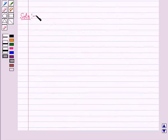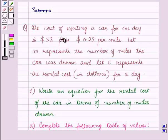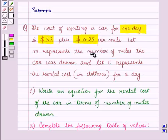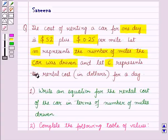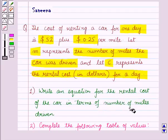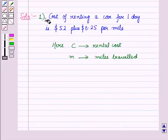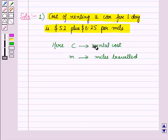Now let us start with the solution of the given question. We are given that the cost of renting a car for one day is $52 plus $0.25 per mile. Here, m represents the number of miles the car was driven and c represents the rental cost in dollars for a day.